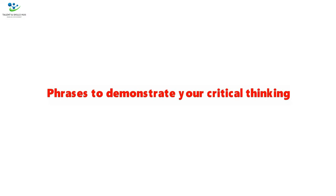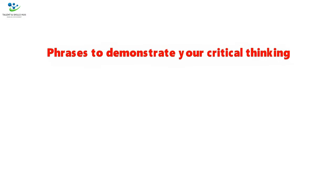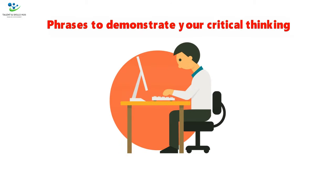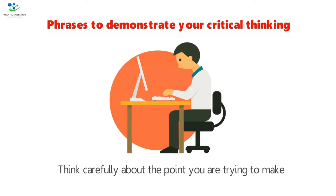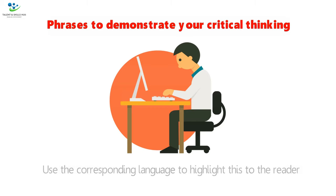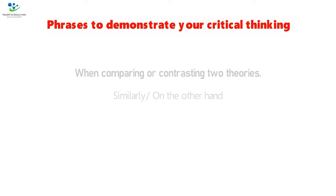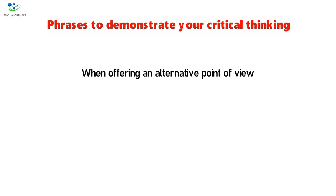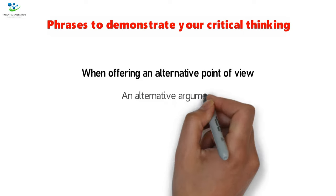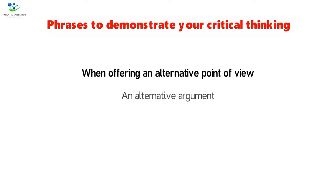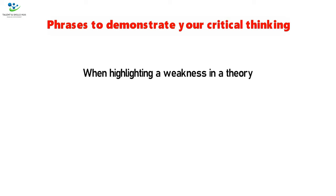Phrases to demonstrate your critical thinking. When writing your critical and evaluation statement, think carefully about the point you are trying to make, and use the corresponding language to highlight this to the reader. When comparing or contrasting two theories, use 'similarly' or 'on the other hand.' When offering an alternative point of view, use 'an alternative argument.' When highlighting a weakness in a theory, use 'one major drawback of this approach.'